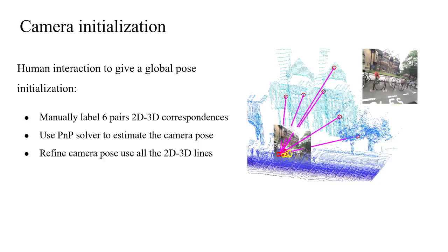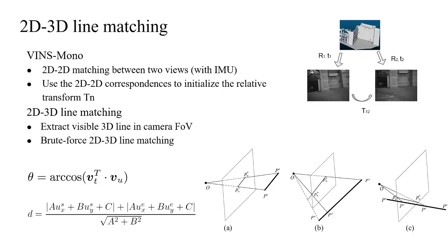For the camera pose initialization of the first frame, it is a kidnapped robot problem and is not the focus of our work. So we manually label six pairs of 2D-3D point correspondences and use a PnP solver to get the pose initialization. Then we run a VO model on the video sequence to get the camera motion between each frame, and this motion is used to predict the camera pose for every keyframe. For 2D-3D line matching, because the total number of 3D lines is very large and most of them are invisible in the local image, we extract the visible 3D lines in the camera field of view using the predicted camera pose.